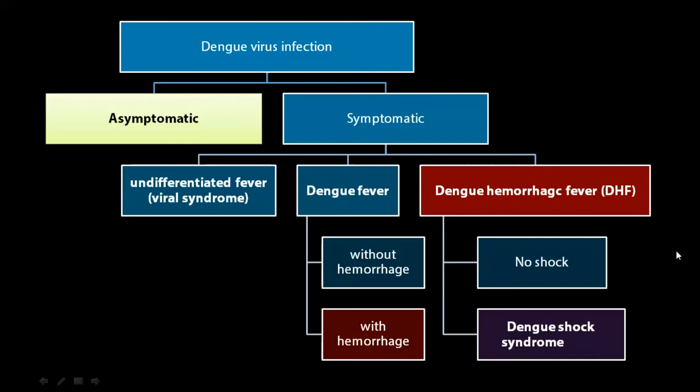Undifferentiated fever is a relatively benign scenario where patients experience fever with mild nonspecific symptoms that can mimic a number of other acute febrile illnesses. These patients do not meet the case definition criteria for Dengue fever, and unless Dengue diagnostic serology and molecular testing is performed, the diagnosis will remain unclear. Symptomatic patients include Dengue fever, which may show hemorrhage or not.